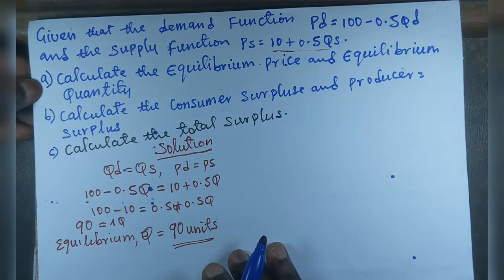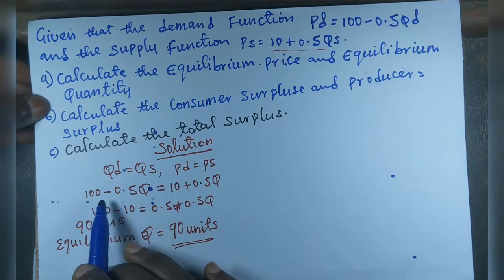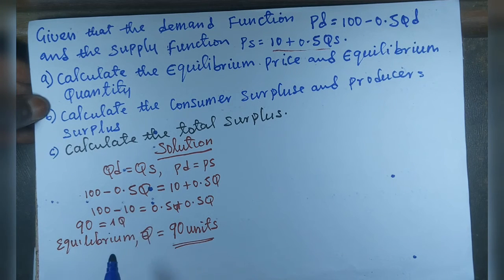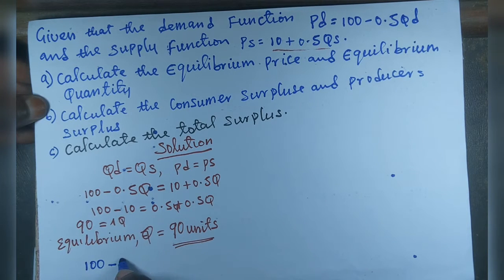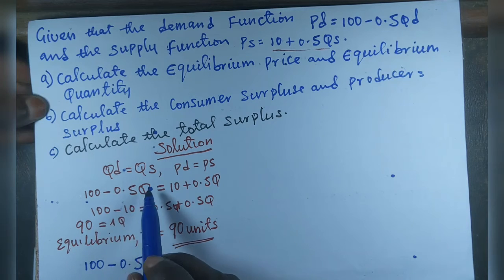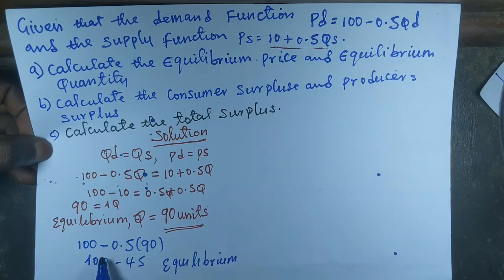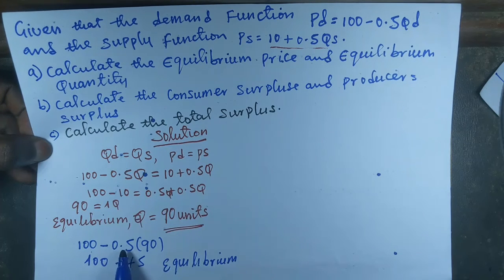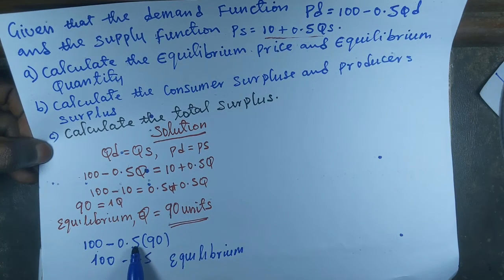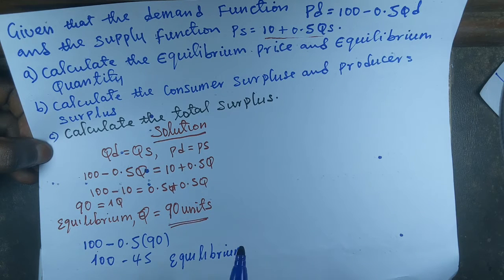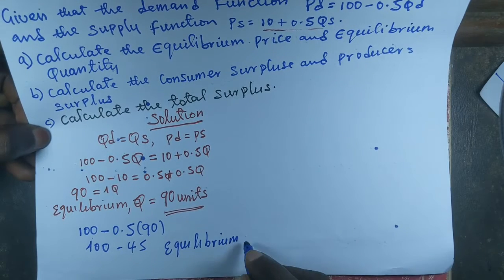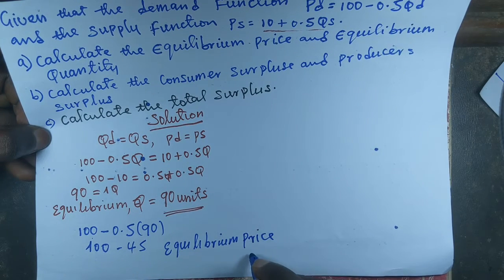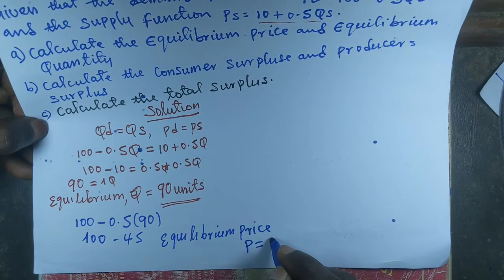From here we can find our equilibrium price by substituting the value of Q into the demand function. Our equilibrium price equals 100 minus 0.5 multiplied by 90. That gives us 90 times 0.5 equals 45, and 100 minus 45 gives us 55. So our equilibrium price P equals 55 US dollars.